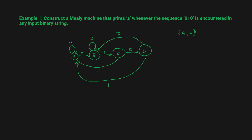Now we will write the outputs. Only when we get the input sequence 0 1 0 — that is, when we arrive at state D — do we print output 'A'. Everywhere else we output 'B'.